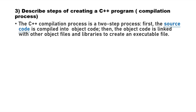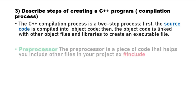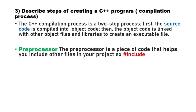Then the object code is linked with other object files and libraries to create an executable file. The pre-process step includes pieces of code that will help you include other files in your project.